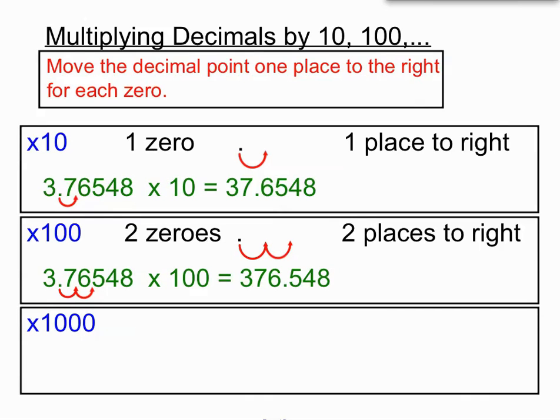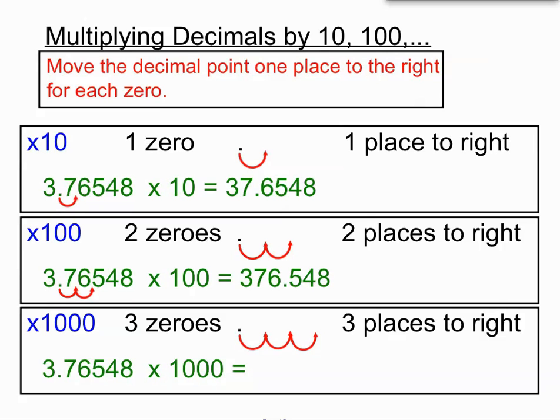If we're multiplying by a thousand, you can see that's got three zeros, and I think you can pick the pattern here. We're going to move the decimal point three places to the right. Same number we're starting with, but this time we're moving the decimal point three places to the right. So quite a pattern there, pretty straightforward once you pick the pattern.